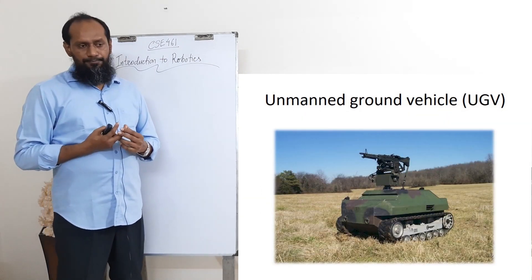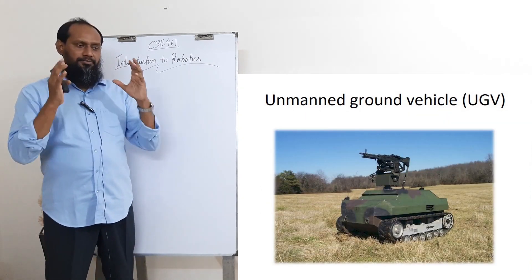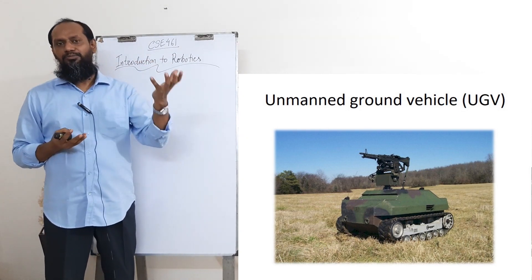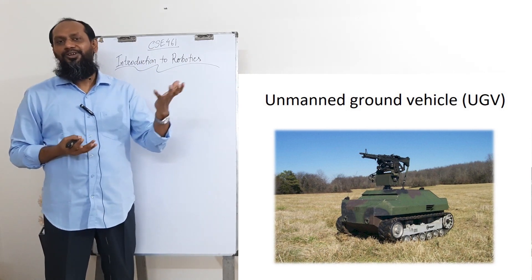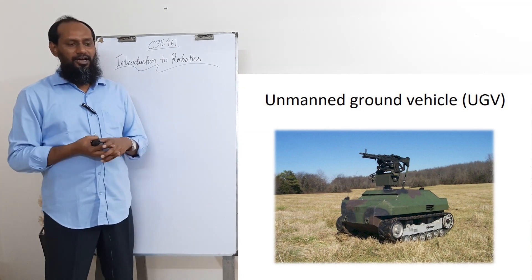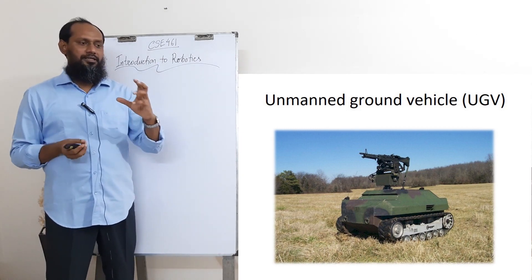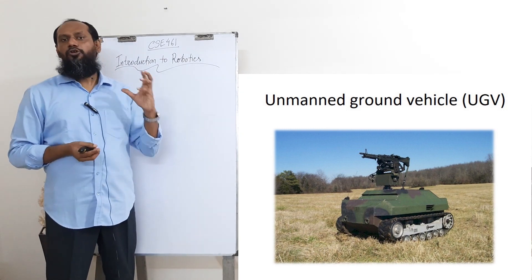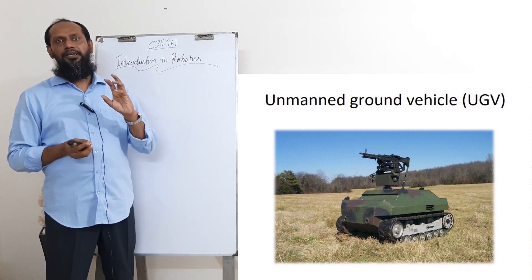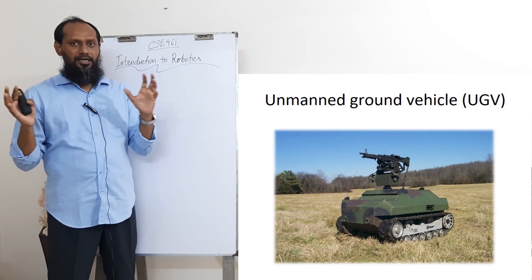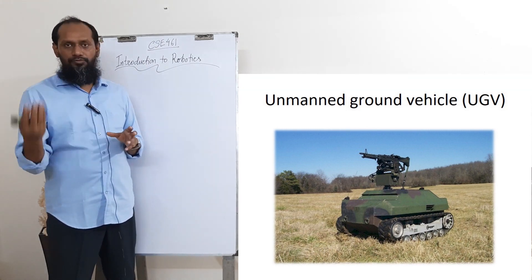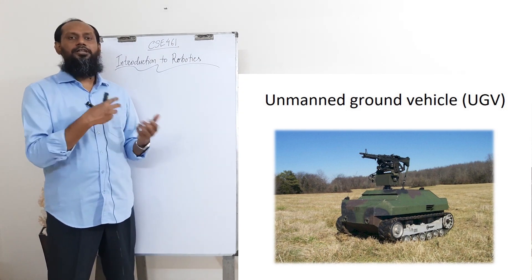This is the unmanned ground vehicle — the vehicle that travels on the ground. The application of robotics is in military purposes; I don't like it, but that is the reality. These are the types of unmanned ground vehicle. I believe autonomous cars are also part of unmanned ground vehicle — any car or device that moves on the surface of the earth, those are called unmanned ground vehicles. It can be autonomous or remote controlled.